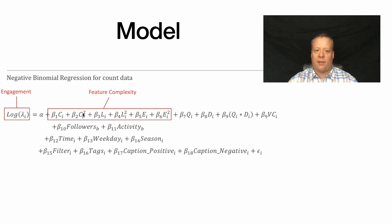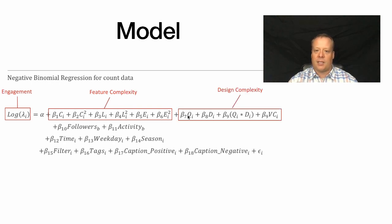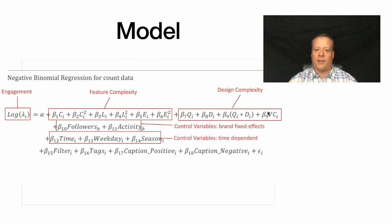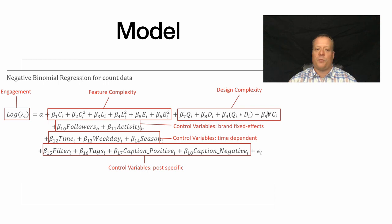We looked at both the regular and squared terms — color, color squared, luminance, luminance squared, edge, and edge squared — to capture nonlinear effects. For design complexity, we included the number of unique objects, dissimilarity, and an interaction term representing the product of unique objects in the space, as well as the visual clutter term. Control variables covered brand fixed effects, time of day, weekday, season, filter used, and number of tags.